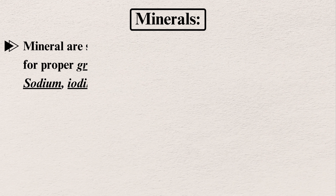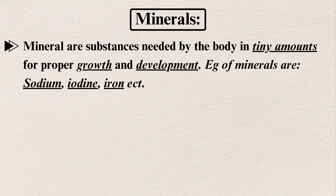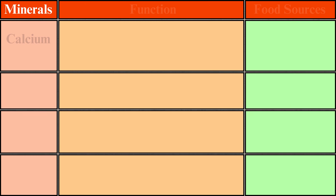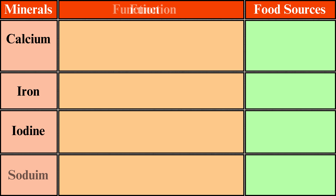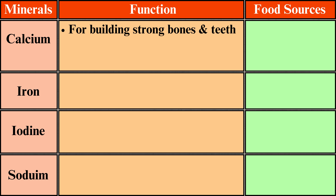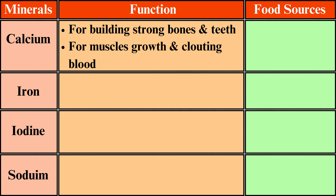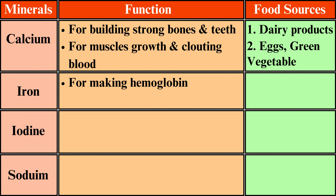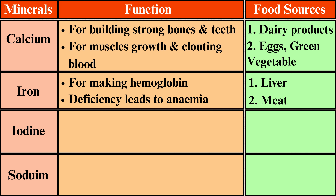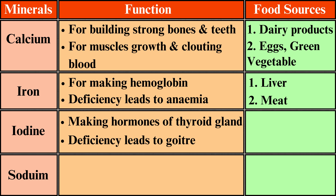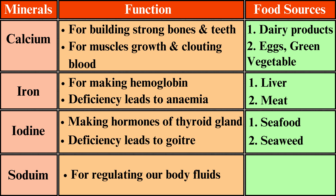Minerals are substances needed by the body in tiny amounts for proper growth and development. Examples include sodium, iodine, iron, and calcium. Calcium: for building strong bones and teeth, muscle function, and clotting of blood. Food sources include dairy products, eggs, and green vegetables. Iron: for making hemoglobin; deficiency leads to anemia. Food sources include liver and meat. Iodine: for making thyroid hormones; deficiency leads to goiter. Food sources include seafood and seaweed. Sodium: for regulating body fluids; source is common salt.